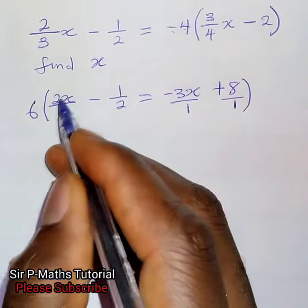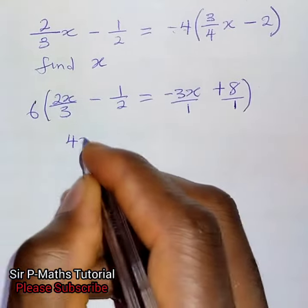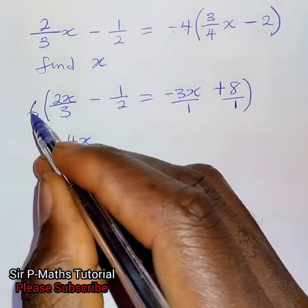Then we divide 6 will give me 2, 2 times 2x give me 4x. 2 divide 6 give me 3, 3 times 1 is 3.